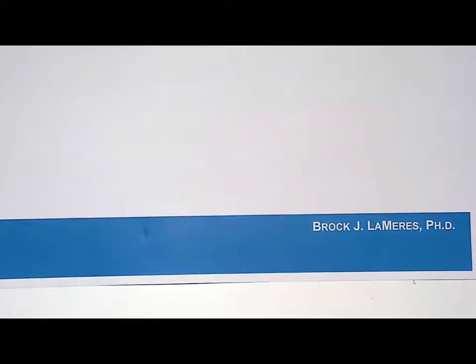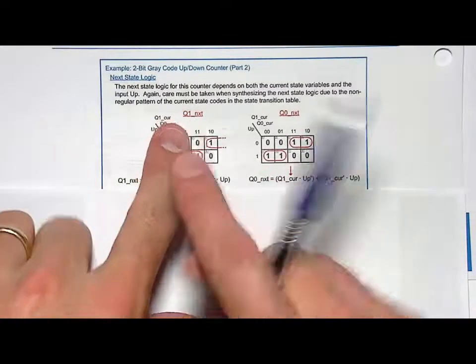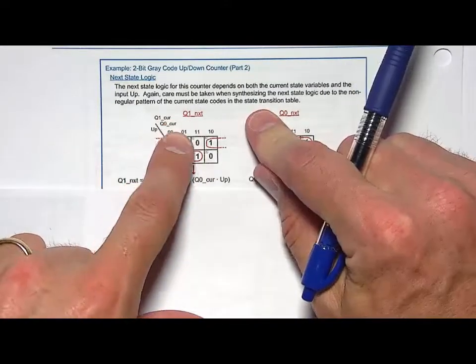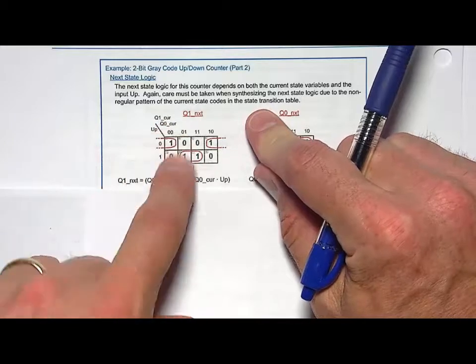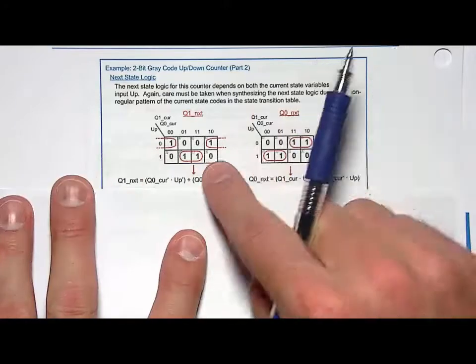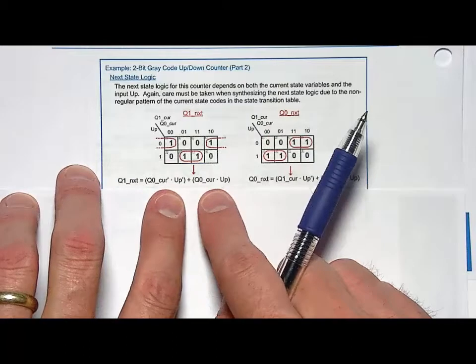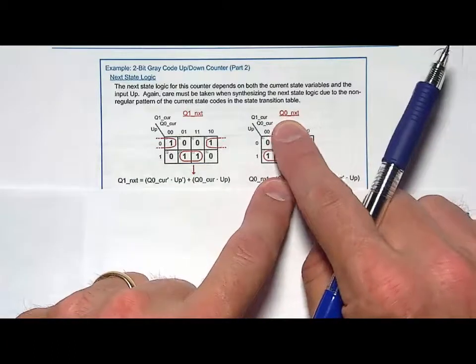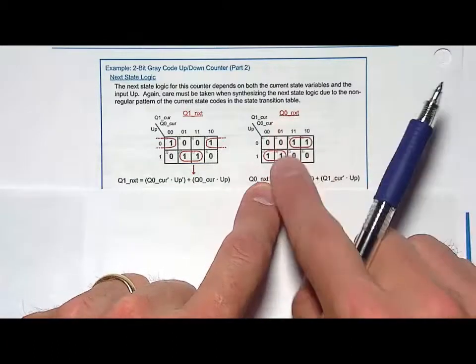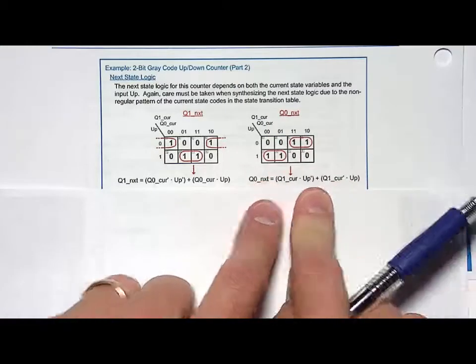So I come along and I go for my K maps for Q1 next, they're dependent on Q1 current, Q0 current and up. I put them in the K map using the appropriate locations in the K map corresponding to the input codes and it turns out I was able to minimize a little bit so I came up with the sum of products logic expression. And then over here I synthesized for Q0 next and I put them in the K map and I was able to again minimize a little bit of logic there so I was able to come up with a minimize logic expression.